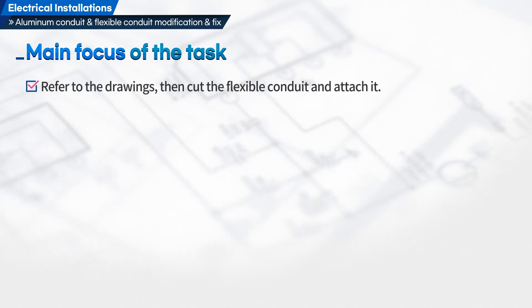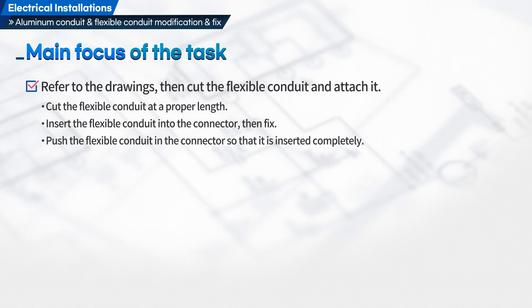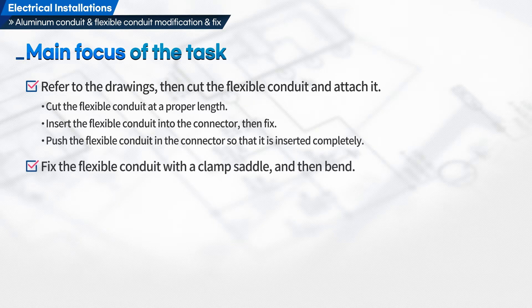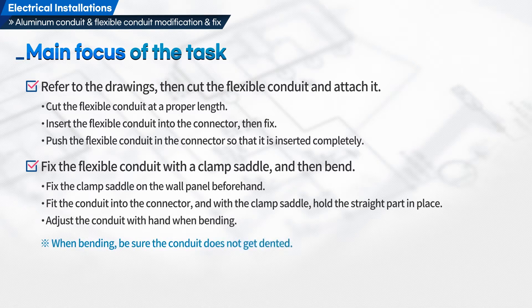Fifth, refer to the drawings, then cut the flexible conduit and attach it. Cut the flexible conduit to a proper length. Insert the flexible conduit into the connector, then fix it. Push the flexible conduit into the connector so that it is inserted completely. Sixth, fix the flexible conduit with a clamp saddle and then bend. Fix the clamp saddle on the wall panel beforehand. Fit the conduit into the connector and with the clamp saddle, hold the straight part in place. Adjust the conduit by hand when bending, making sure the conduit does not get dented.